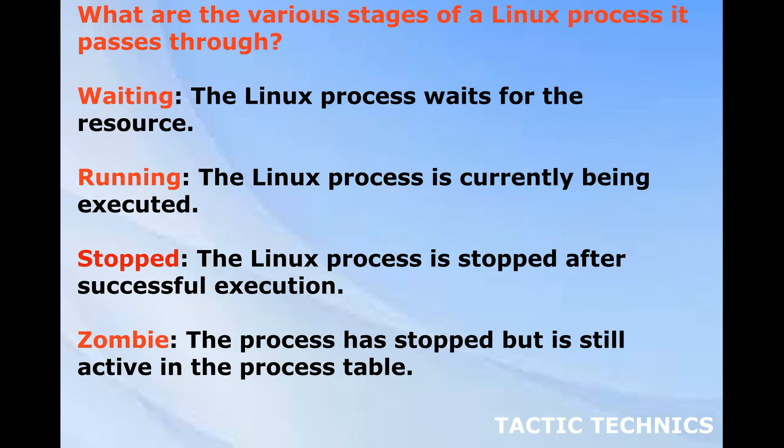What are the various stages of a Linux process it passes through? Waiting — the Linux process waits for the resource. Running — the Linux process is currently being executed. Stopped — the Linux process is stopped after successful execution. Zombie — the process has stopped but is still active in the process table.